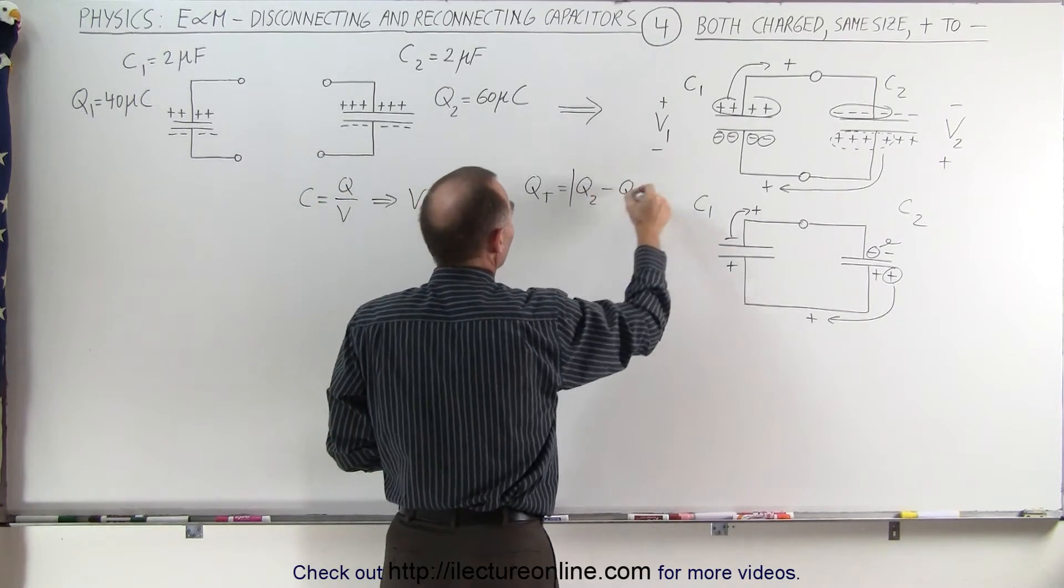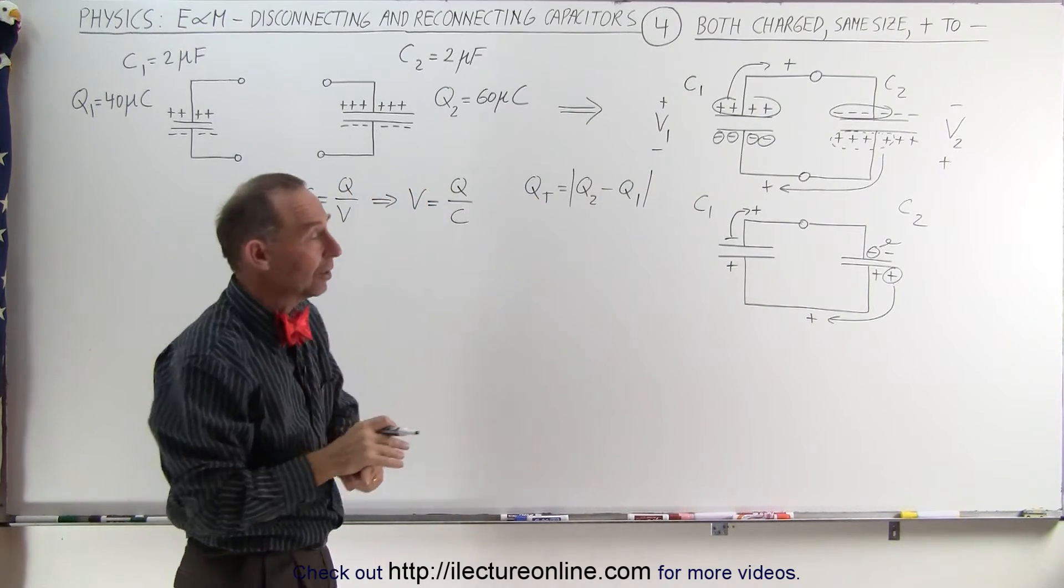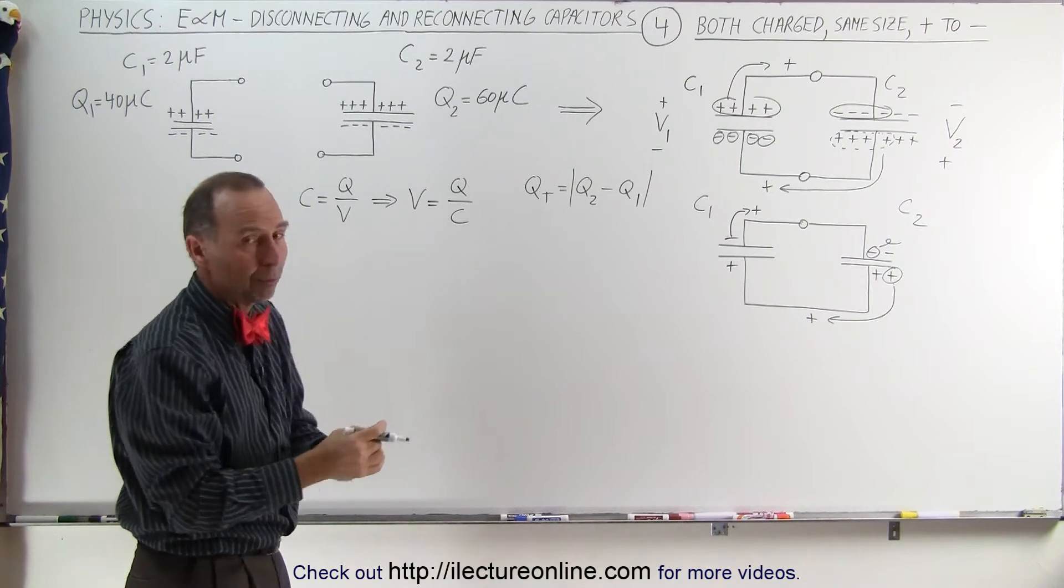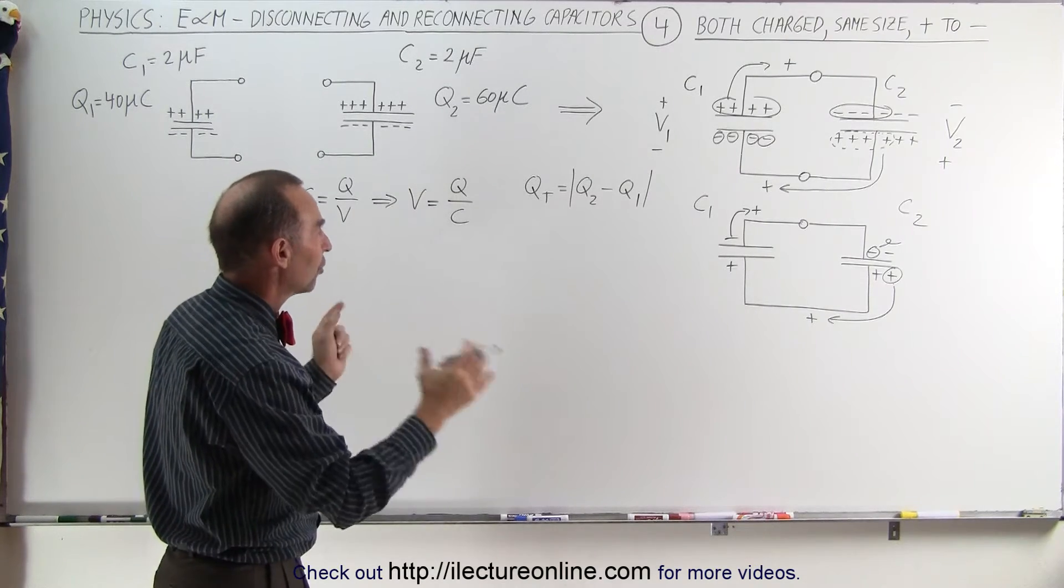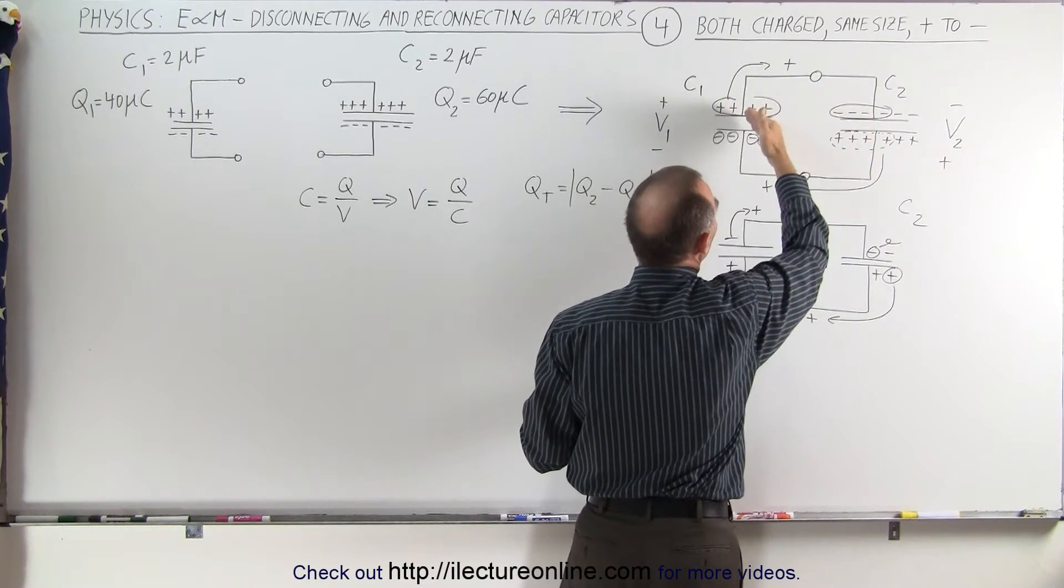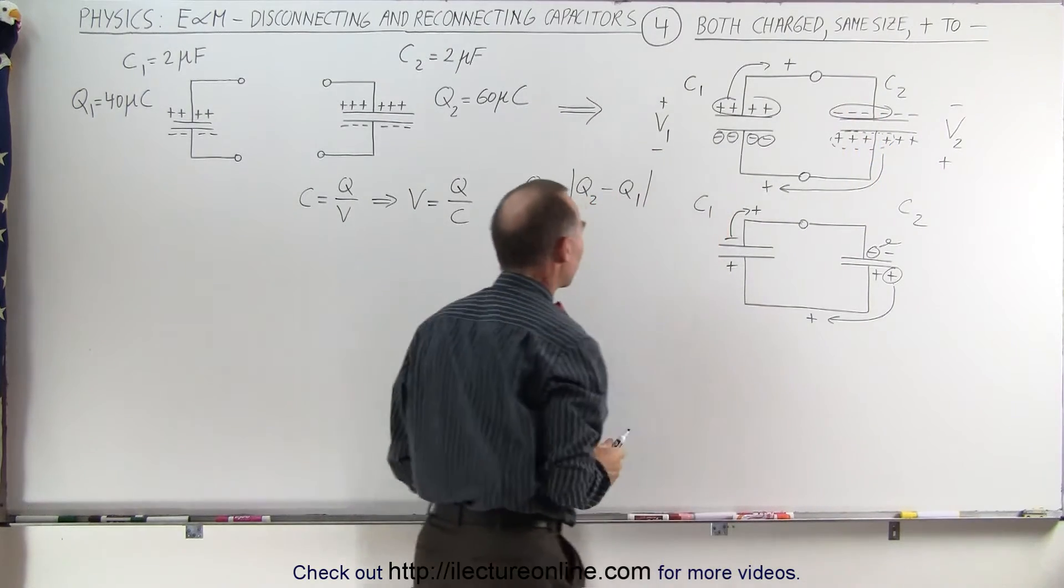You may want to put an absolute value sign there because you don't know which one is bigger, so you always end up with a positive quantity. The total charge will be greater than zero once you're done transferring the initial charge, canceling one capacitor with the charge of the other capacitor.